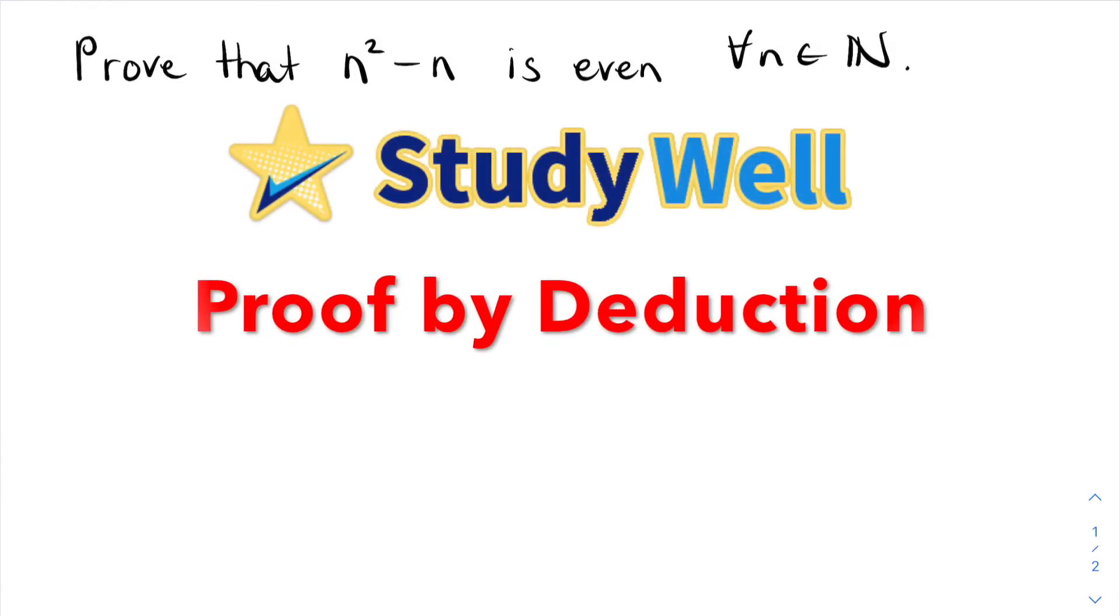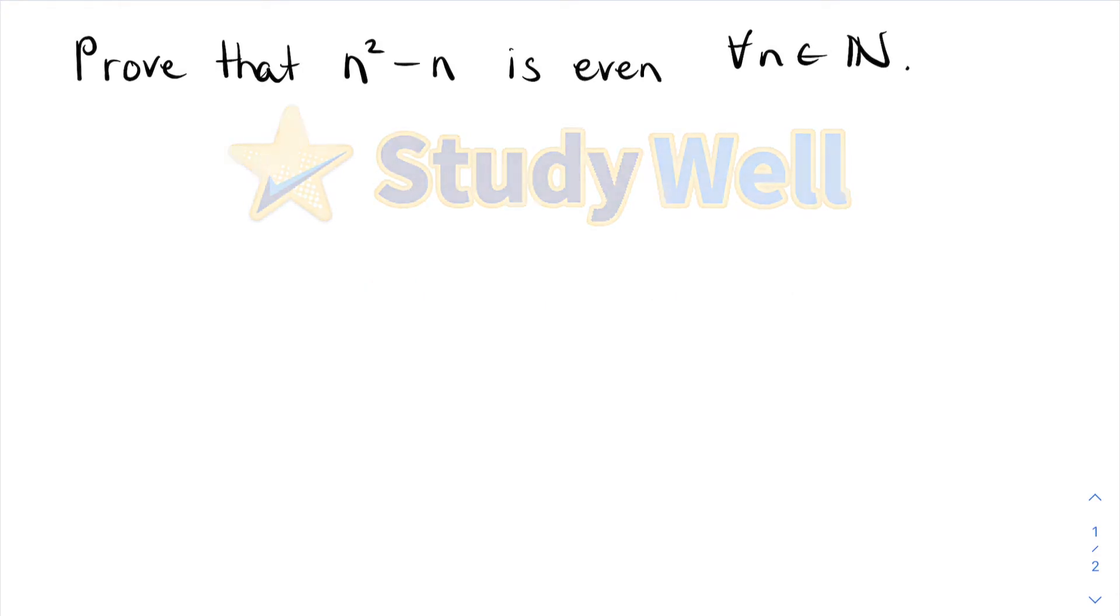Here we have the question: prove that n squared minus n is even for all n in the natural numbers. This is a proof by deduction question because I'm going to use algebra and standard mathematical techniques to show that this is true.